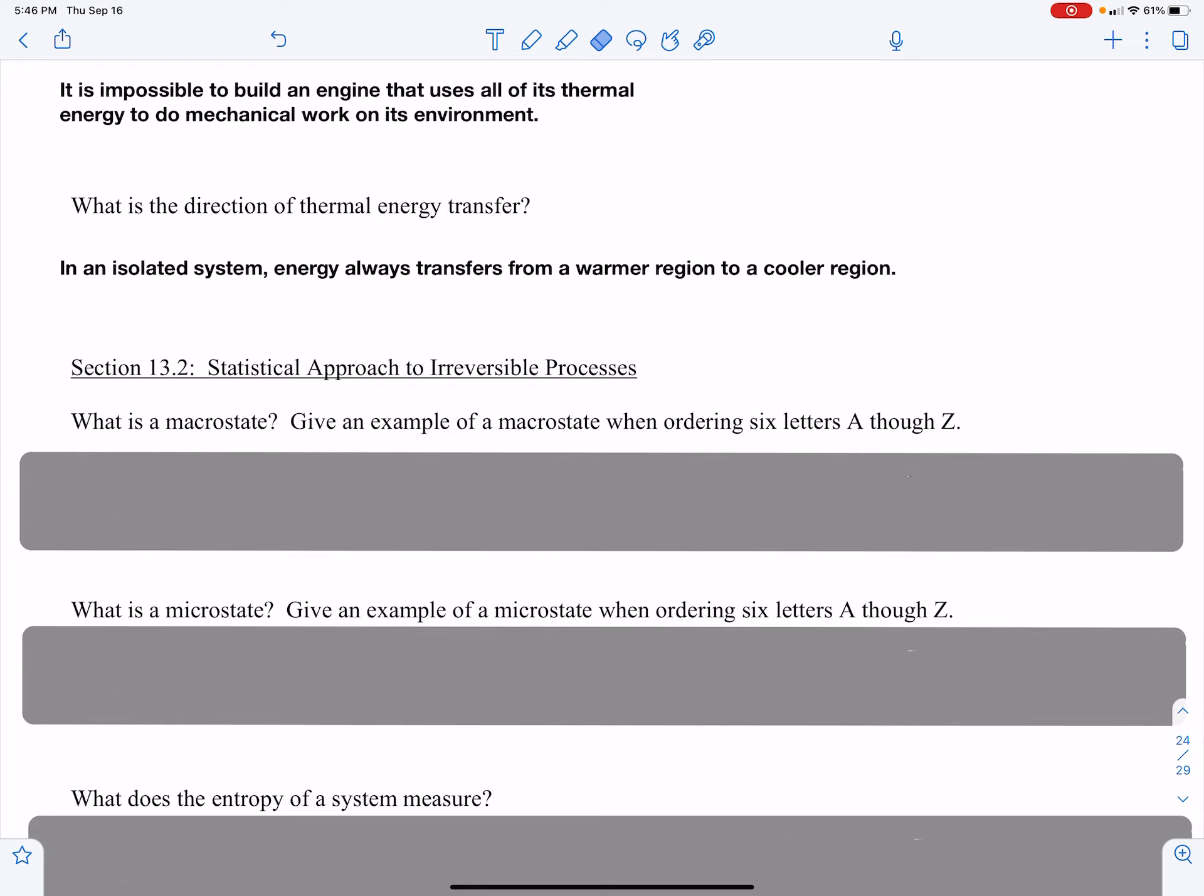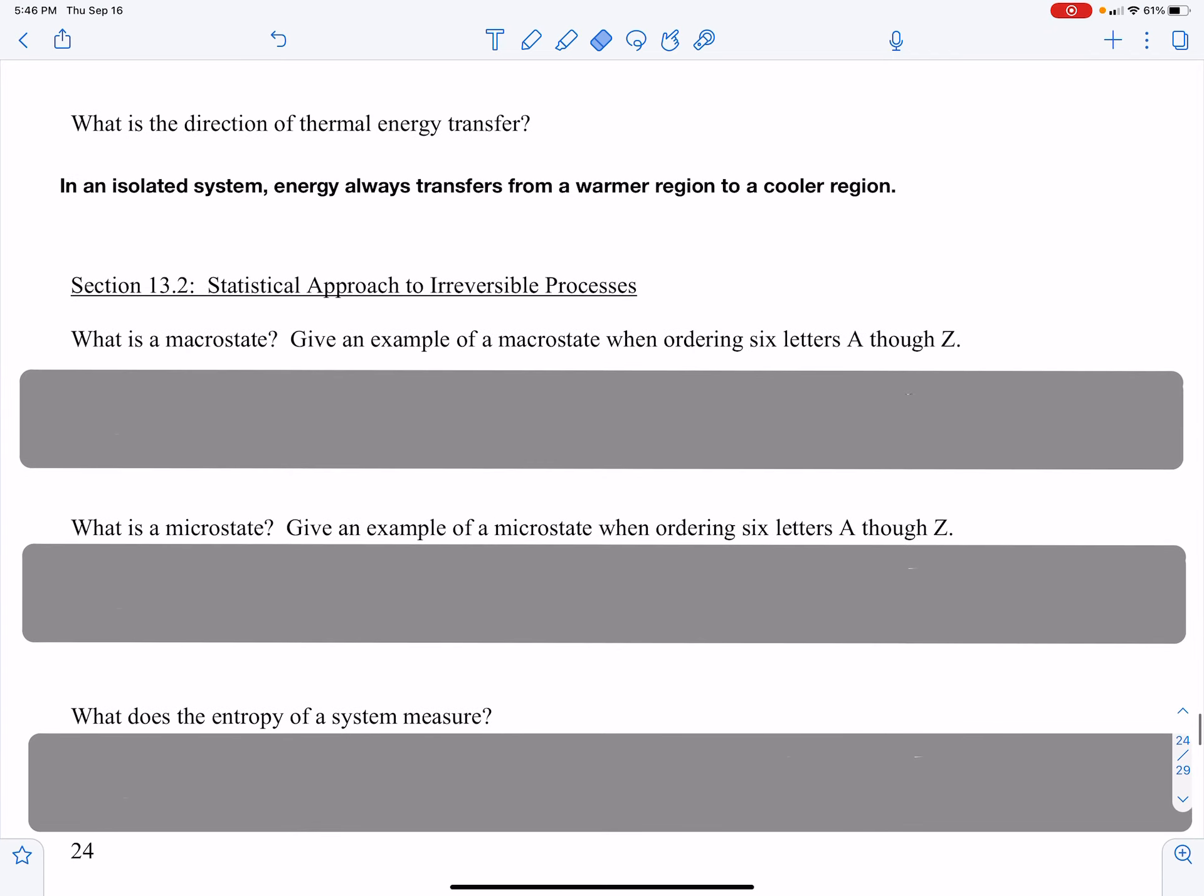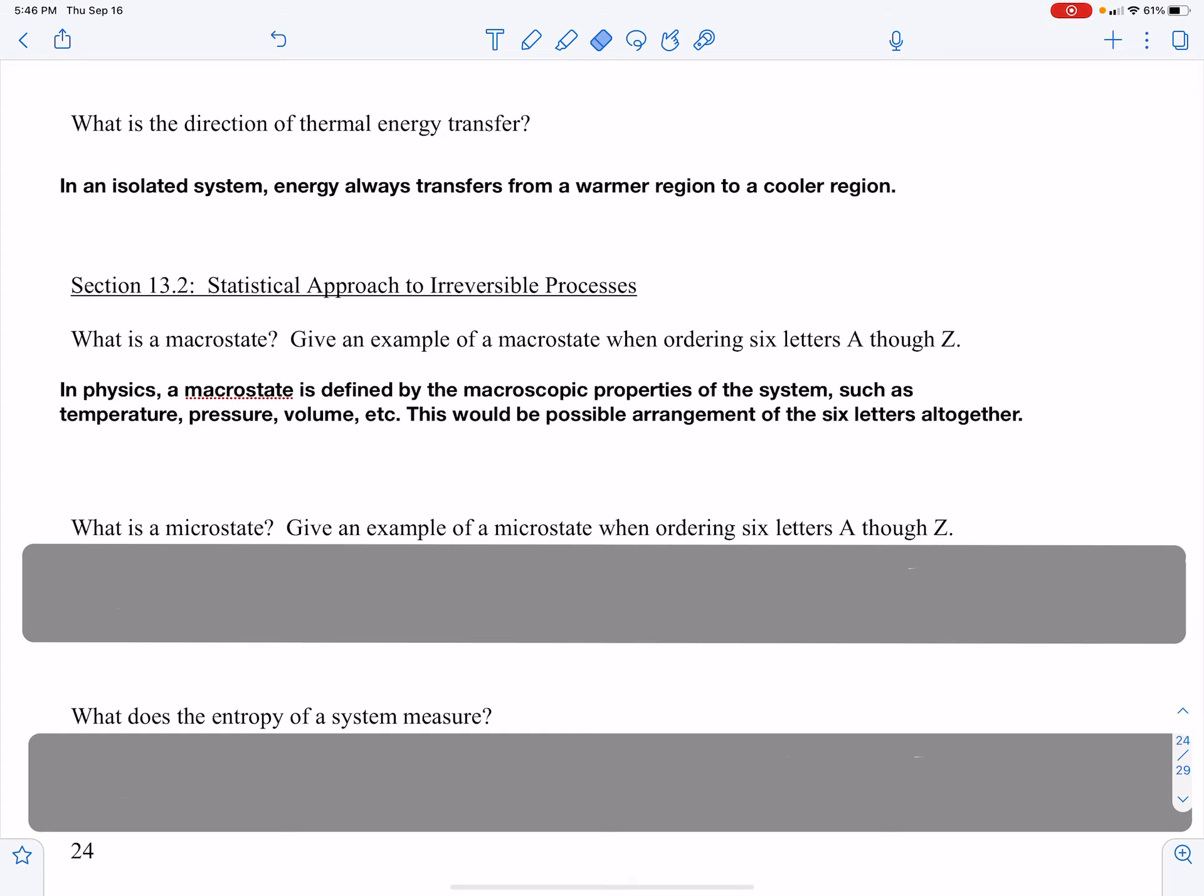Section 13.2 Statistical Approach to Irreversible Processes. What is a macrostate? Give an example when ordering six letters A through Z. Well, in physics, a macrostate is defined by the macroscopic properties of the system, such as temperature, pressure, volume, etc. With the example given, this would be the arrangement of the six letters altogether.